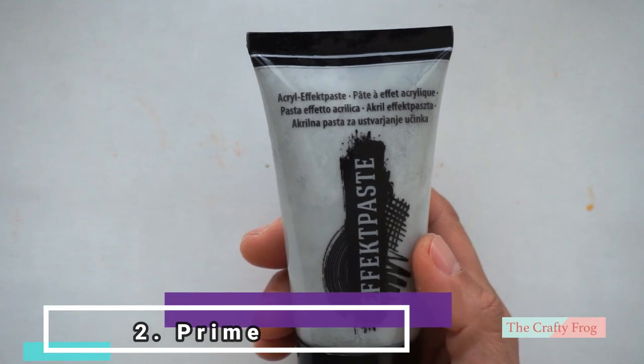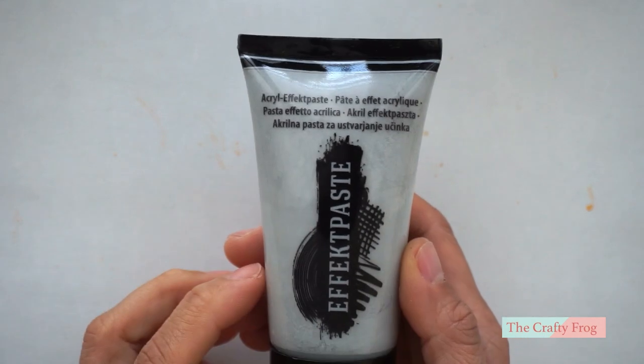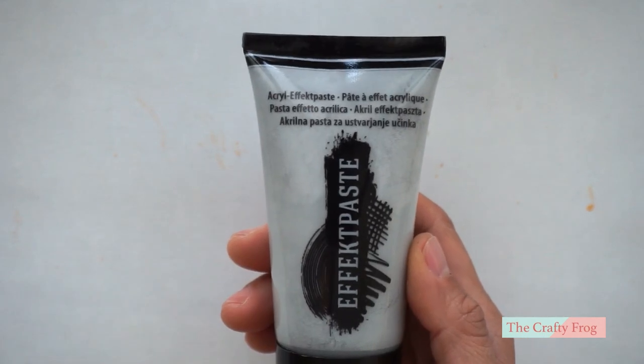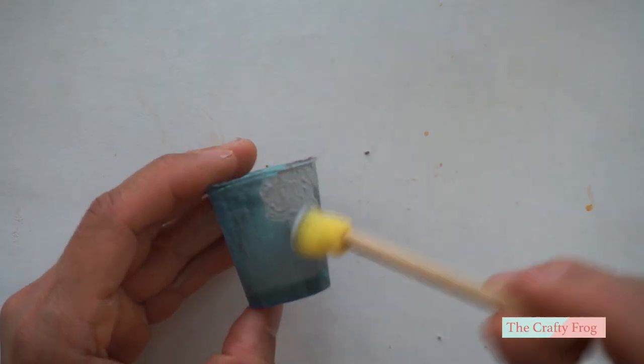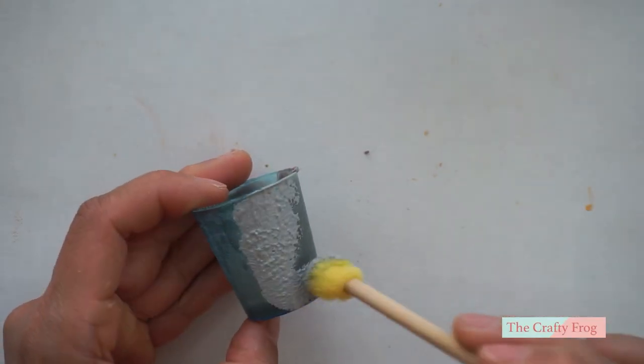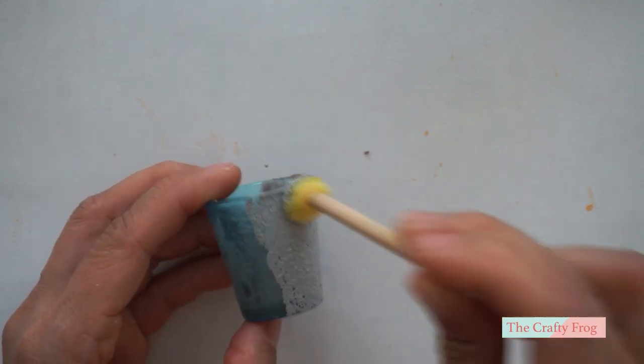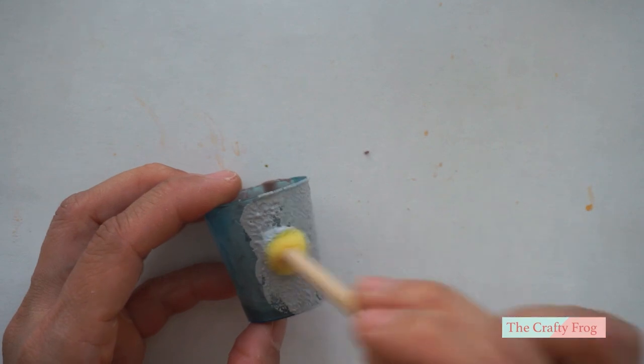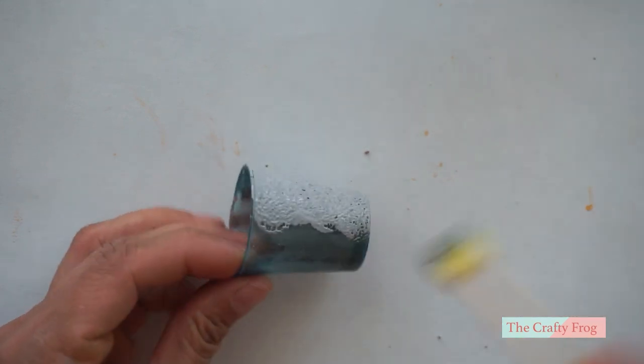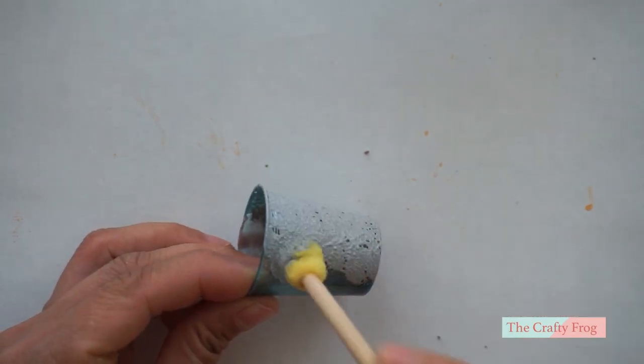Next, I am going to use this effect paint in concrete grey as a primer. This paint adds a texture on the surface and I am using a sponge to apply the effect paint. I am only using one coat here, but you can use more if you need to. After applying the effect paint, set it aside and let it dry.